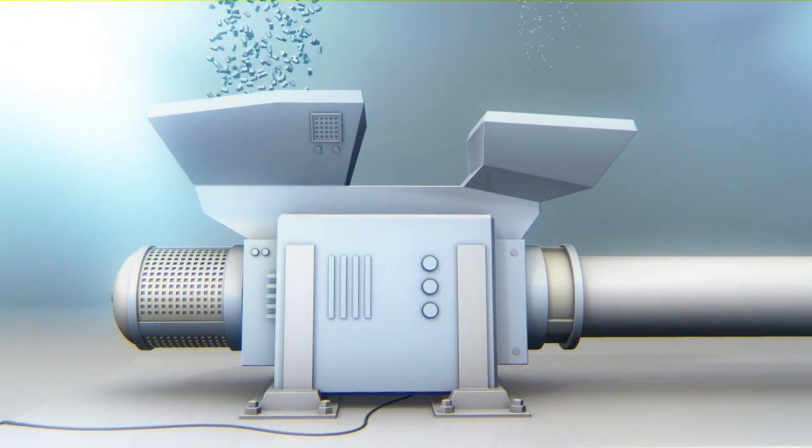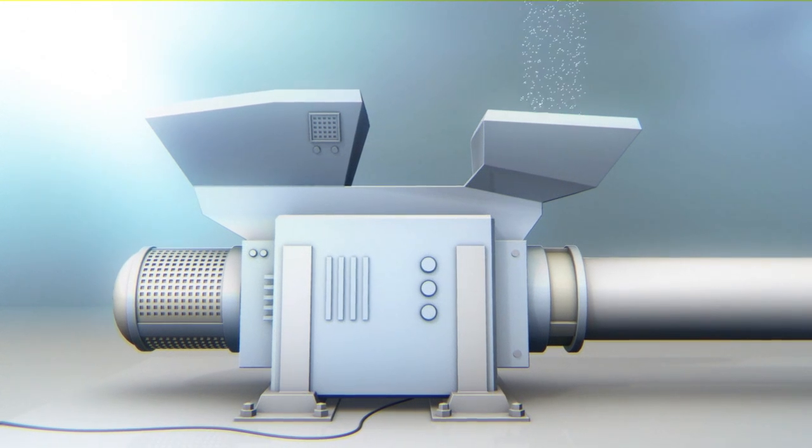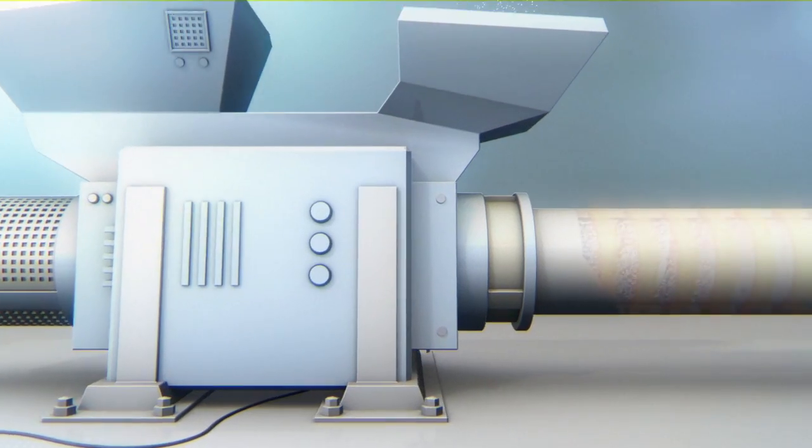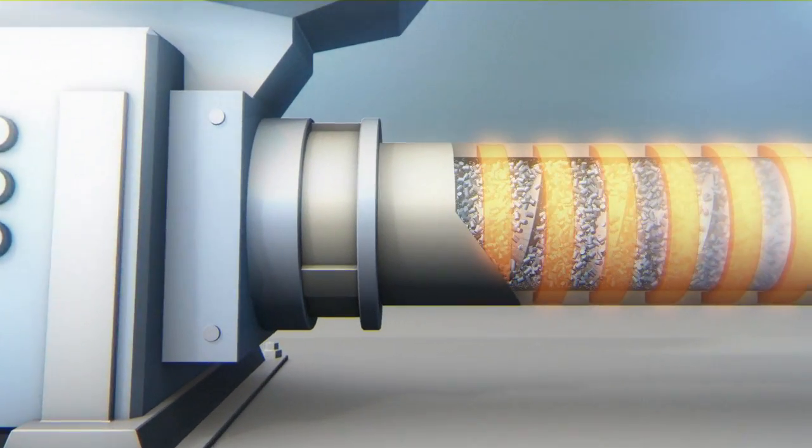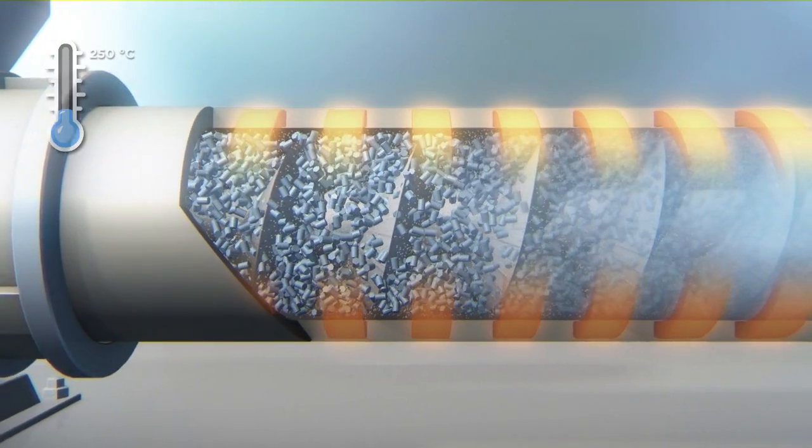First, plastic granules and then, through another feeding funnel, the Exolite powder are added. In the rotating screw, the plastic granules melt under pressure and high temperature and are mixed with the Exolite particles.